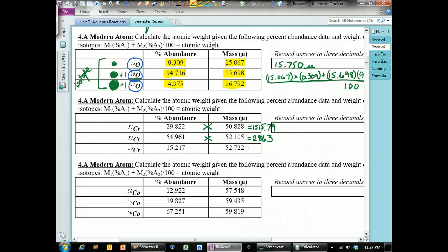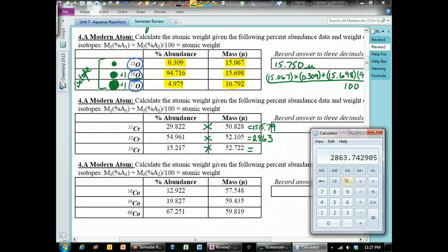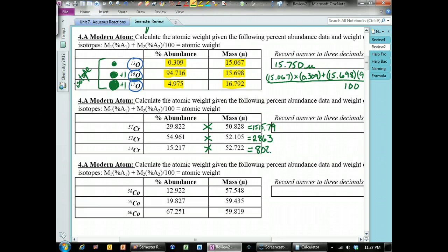And then, the last one, we're going to multiply these two numbers by each other. The 15.217. And then, multiply by 52.722. 802.27.